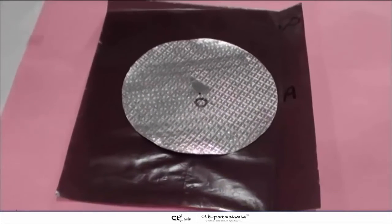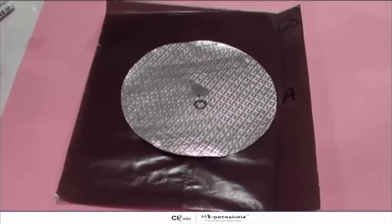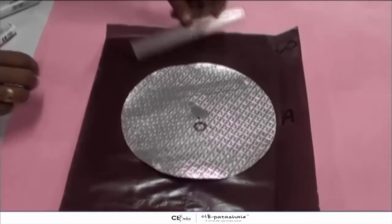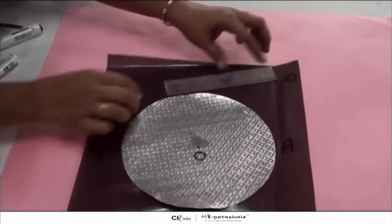Now after that, from P, again fold the paper in such a way that it just touches the circle to get another tangent.